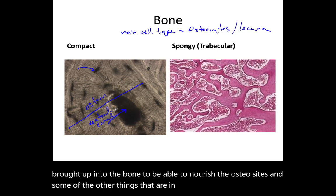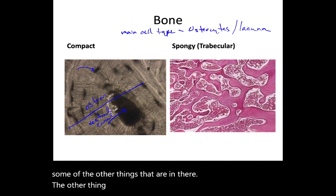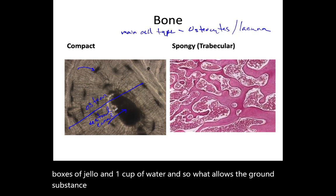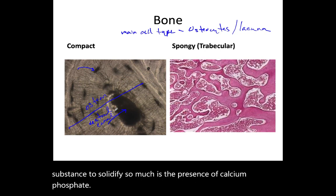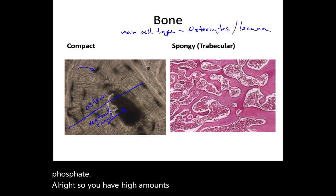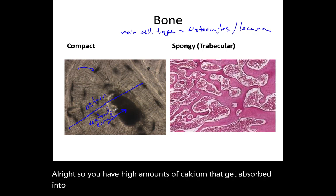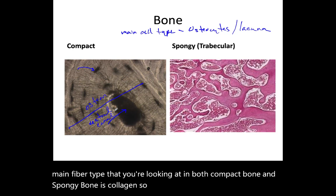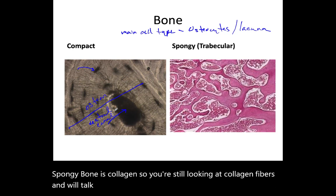With compact bone, you've got the equivalent of three boxes of jello to one cup of water. What allows the ground substance to solidify so much is the presence of calcium phosphate — high amounts of calcium get absorbed into the ground substance of the bone, really solidifying it. The main fiber type in both compact and spongy bone is collagen.